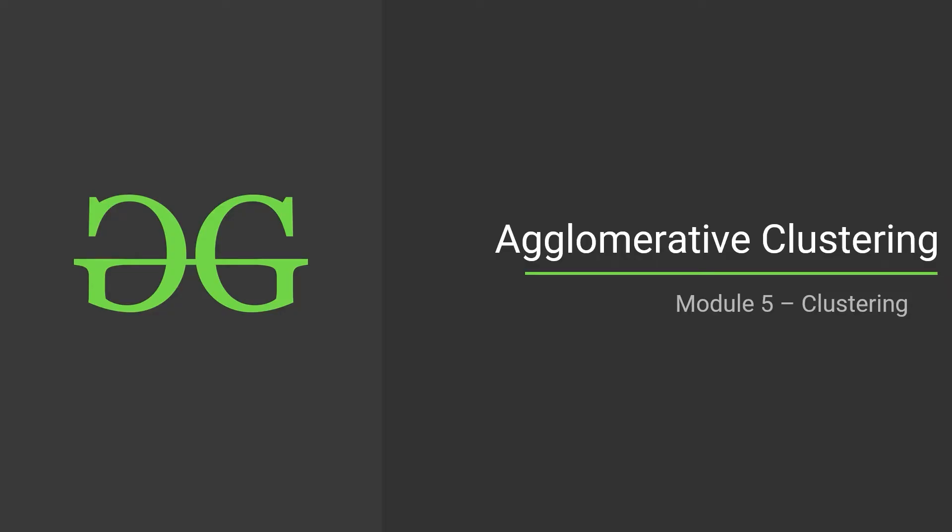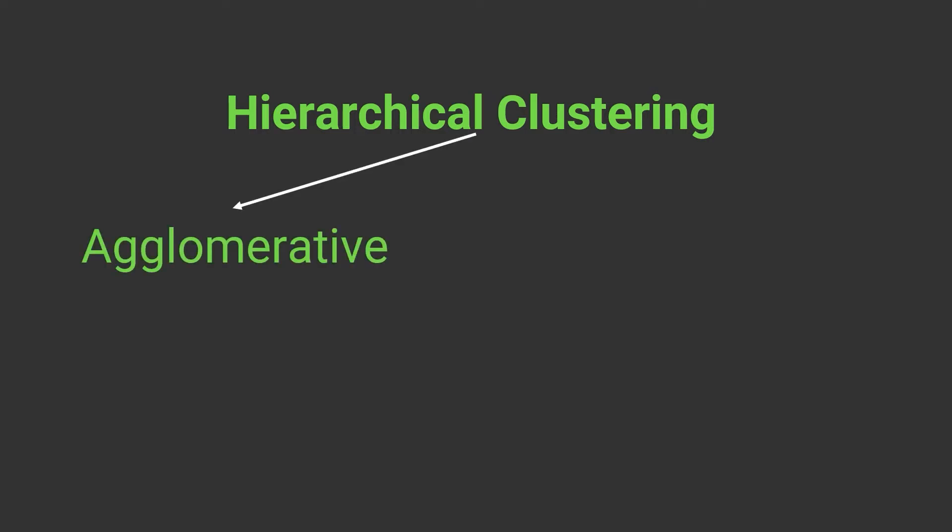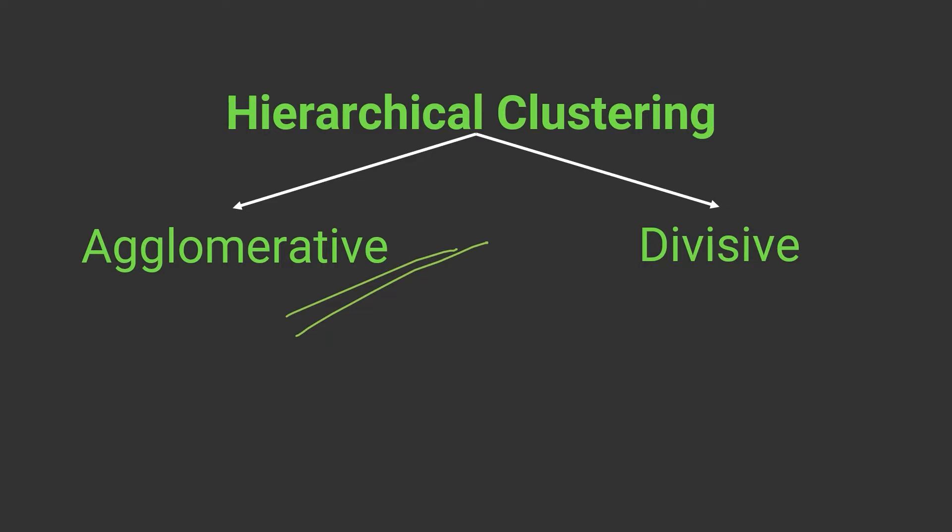Welcome to the next lecture of the clustering module. In this lecture we are discussing how agglomerative clustering works. Agglomerative clustering is a part of hierarchical clustering. In hierarchical clustering we have two different kinds of techniques: first is the agglomerative approach and the other is the divisive approach, and in this lecture we are discussing the agglomerative approach.